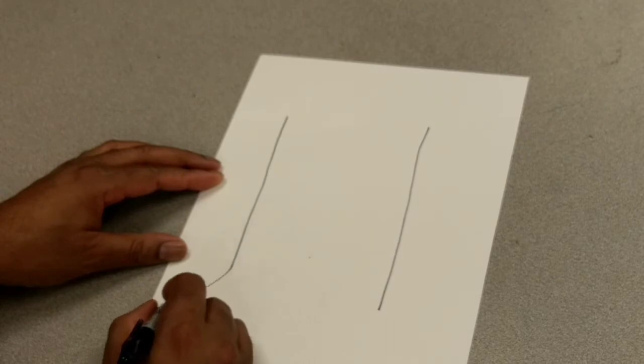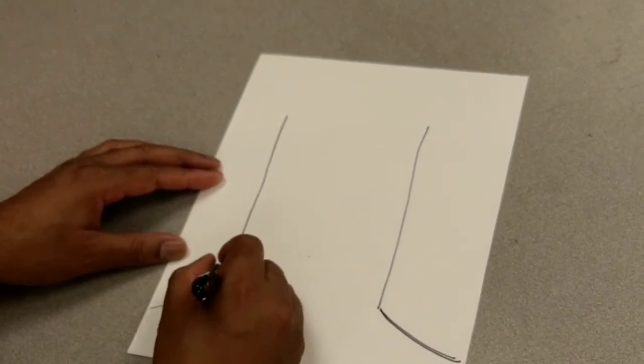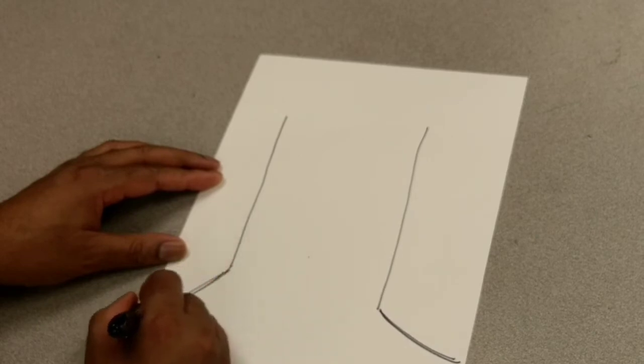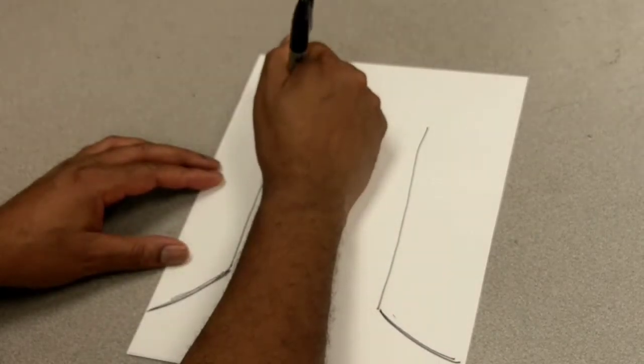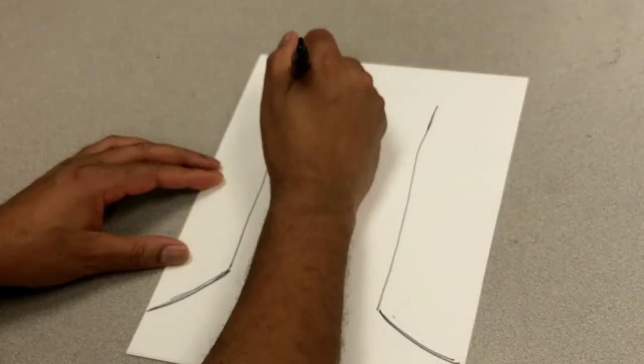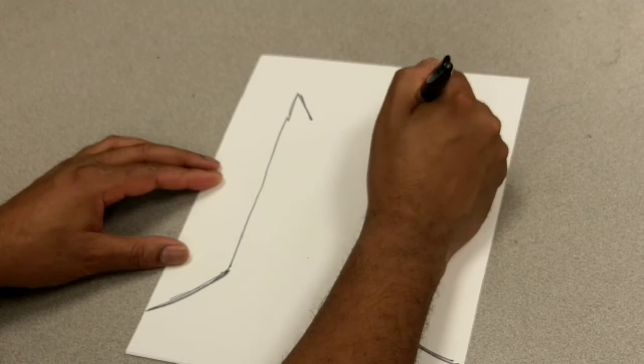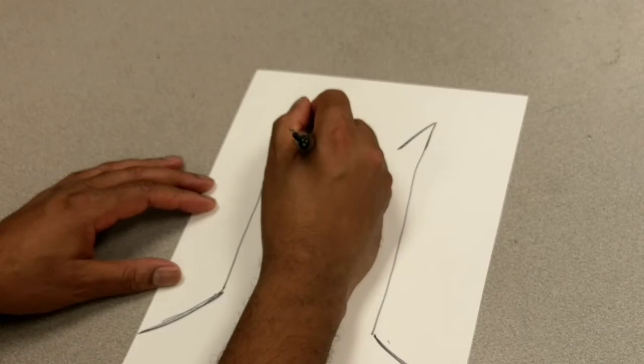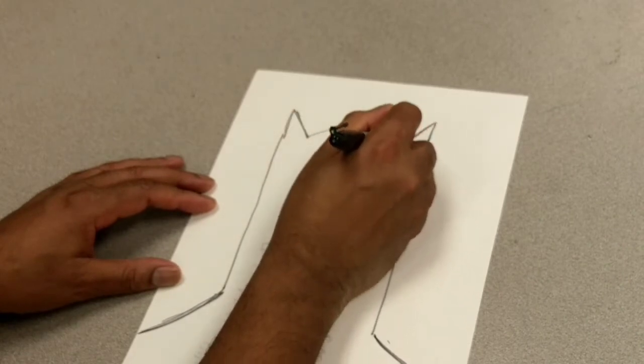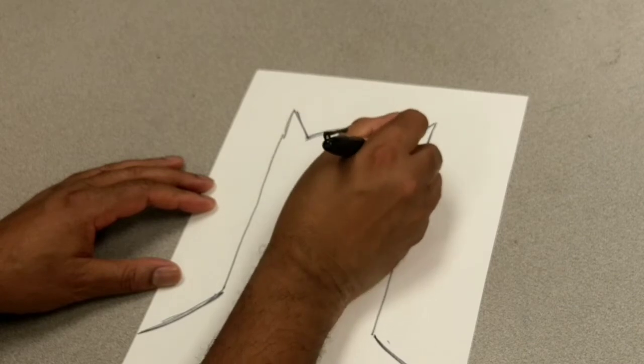Then we're going to make some lines go down like this for Batman's cape. I'm drawing very roughly with a marker so you can see what I'm doing. Then, we're going to go a little bit higher here for his ears. Then we're going to make a point here and a point here. Then, we're going to go up like this. Starting to take shape already, boys and girls.